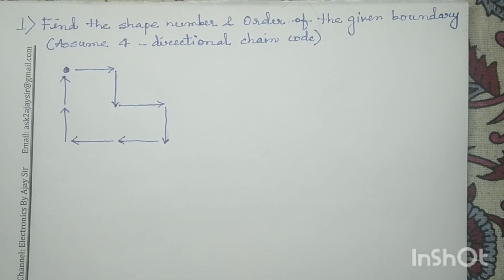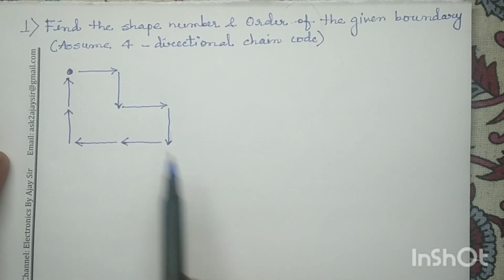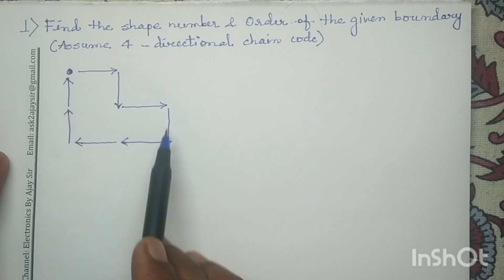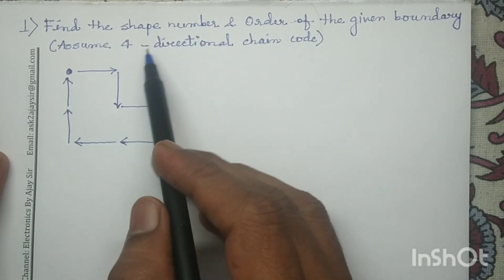Good morning all. Today we will discuss some numerical questions on chain code. This is the first question — for this given boundary we have to determine the shape number and the order.